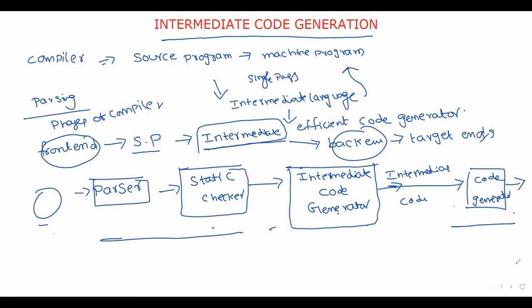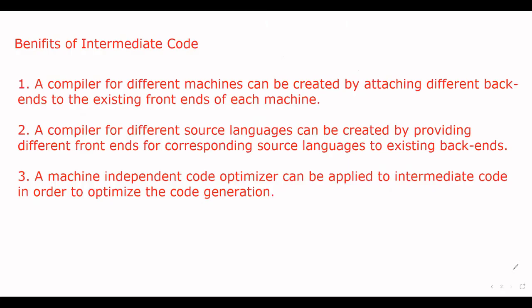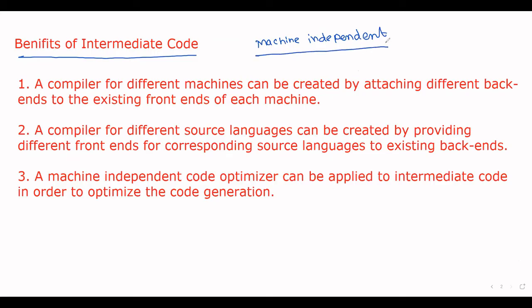Now we will discuss some of the benefits of intermediate code. The first important point is that the generated intermediate code is machine independent. This means the code does not depend on any particular machine.